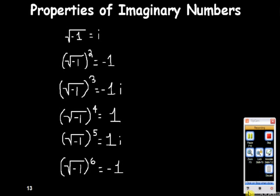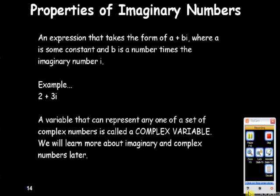So let's look at some of the properties of imaginary numbers. The square root of negative 1 is equal to i. So i squared is equal to negative 1. And of course, i raised to the cube power is equal to negative 1i. I to the fourth power is equal to 1. I to the fifth power is equal to positive 1i. I to the sixth power is equal to negative 1. And there's a pattern that goes here.